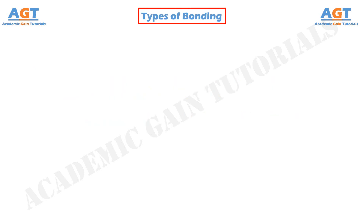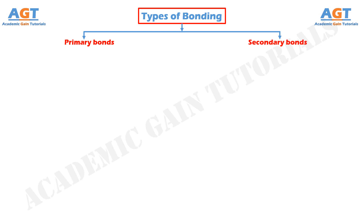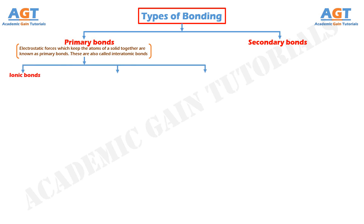Types of bonding. The various types of bonds in solid materials can be divided into two categories: primary bonds and secondary bonds. Primary bonds — the electrostatic forces which keep the atoms of a solid together are known as primary bonds. These are also called interatomic bonds. The various types of primary bonds are ionic bonds, covalent bonds, and metallic bonds.